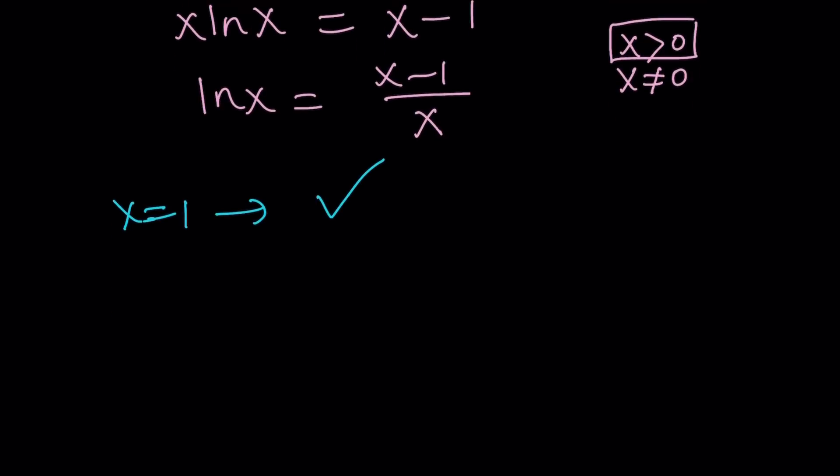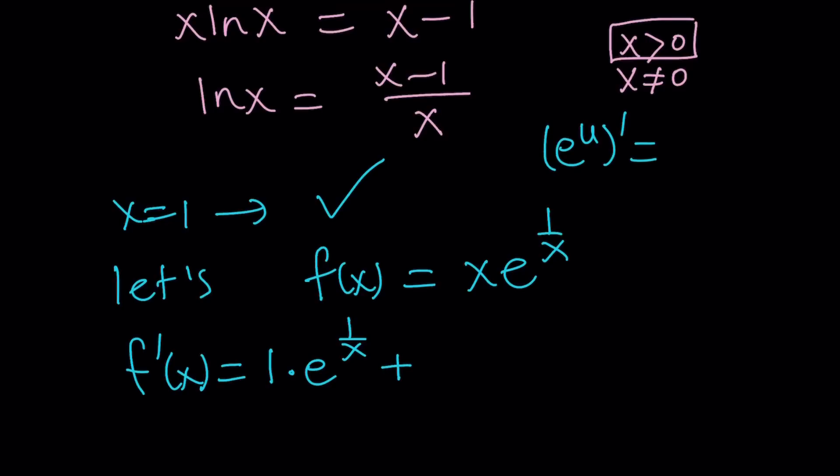Let's consider f of x equals x e to the power 1 over x. I'm going to go ahead and differentiate this function with respect to x. This is a product, so I'm going to use the product rule. The derivative of x, which is 1, times the second function, plus the derivative of e to the power 1 over x. To differentiate e to the power u, you use the chain rule, which is e to the power u, multiply by the derivative of what we call the inside, which is u prime.